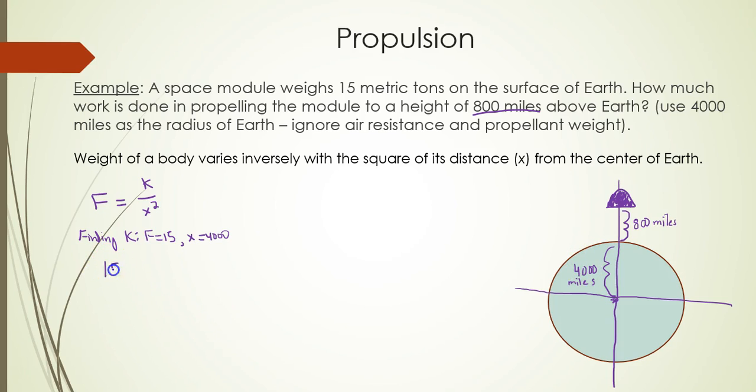So you get 15 equals k over 4,000 squared. You get 15 equals k over 16,000,000. And you actually do end up getting that k equals 240,000,000.